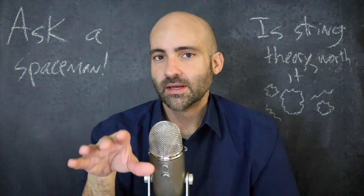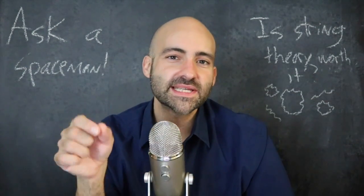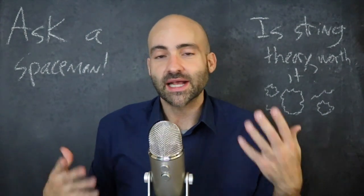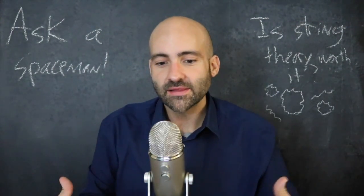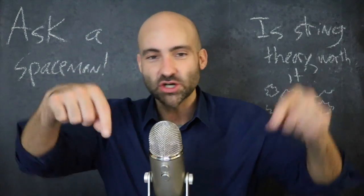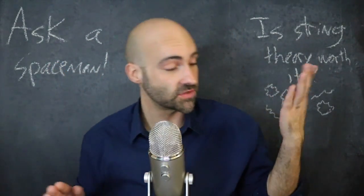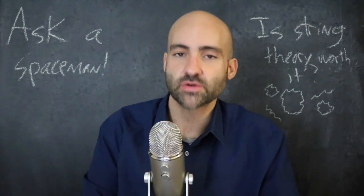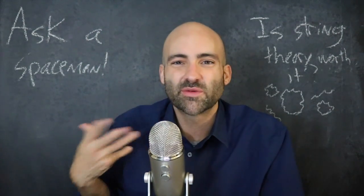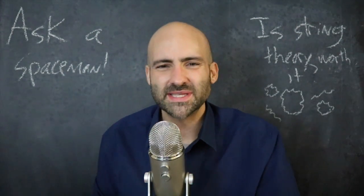String theory got its start in the 1960s, over 60 years ago. It got going from a technique developed in the 1940s, and they were trying to apply it to the strong nuclear force. As they started digging into the mathematics and poking around, they found strings — little loops. These little strings were the carriers of the strong nuclear force in this theory.